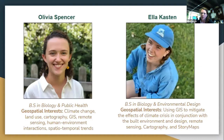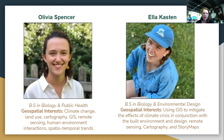I majored in biology and environmental design at William & Mary. I got into GIS because I wanted to use it to mitigate the effects of the climate crisis, as well as study how the built environment and design interact. I also got into remote sensing, cartography, and story maps. Olivia had a similar background — she also wanted to use geospatial technologies for climate change, cartography, GIS, and human-environment interactions.